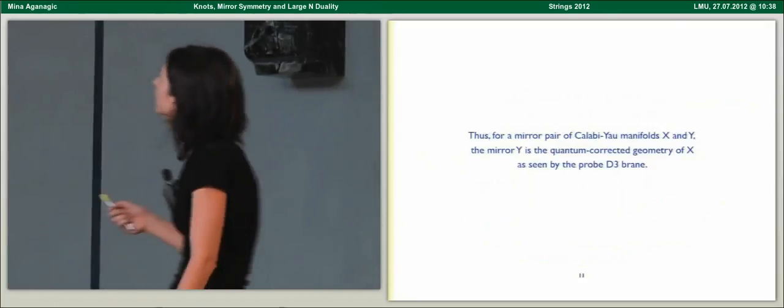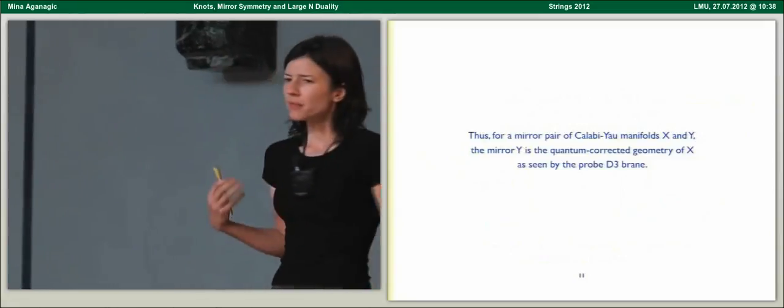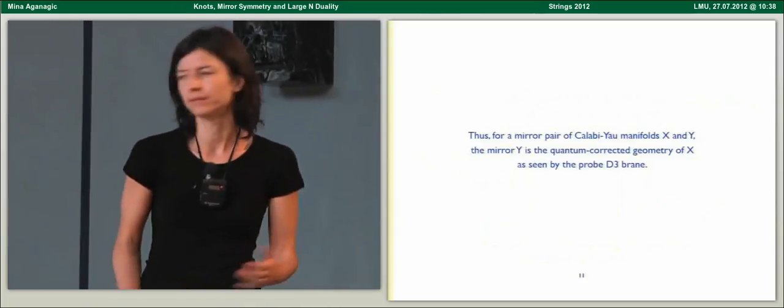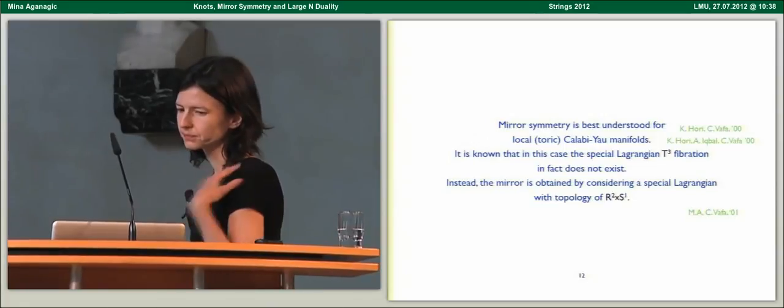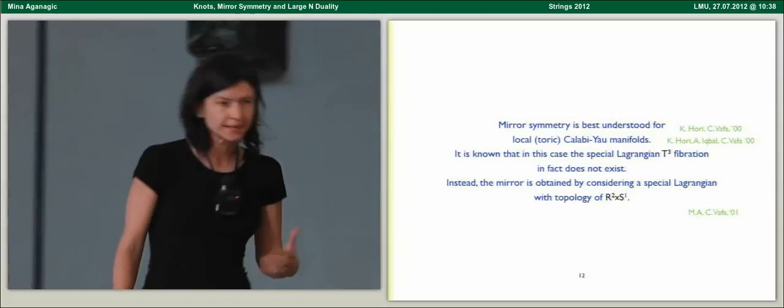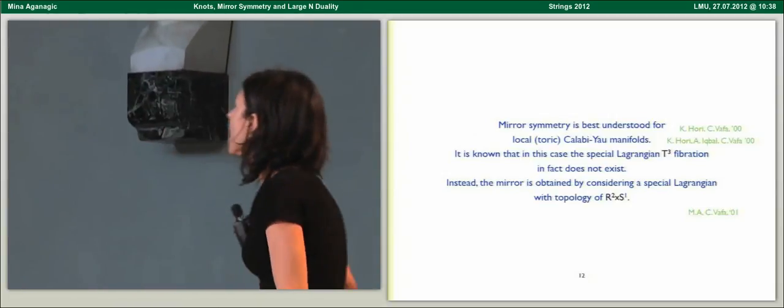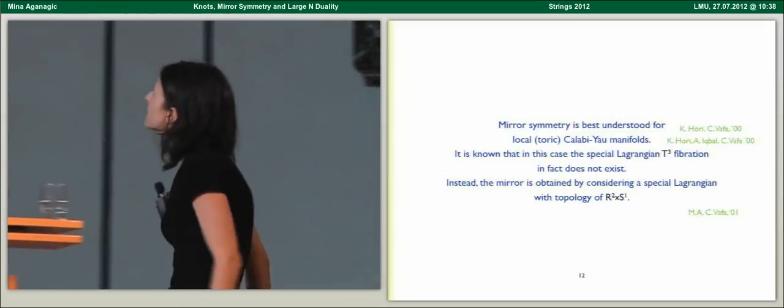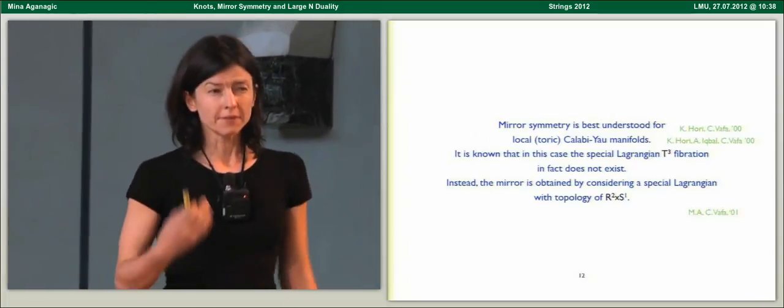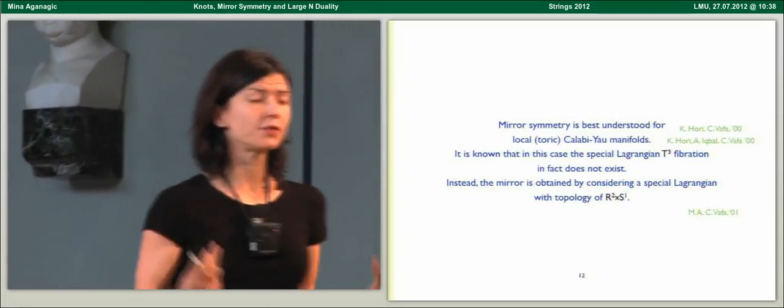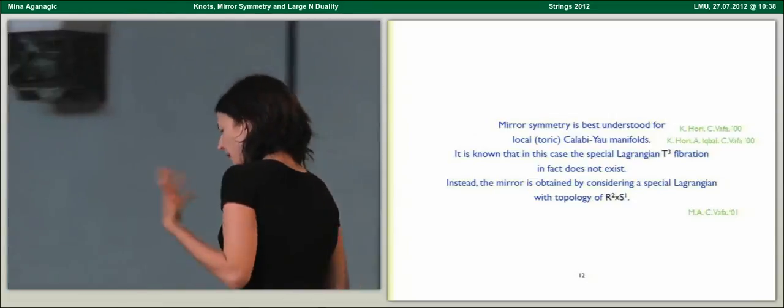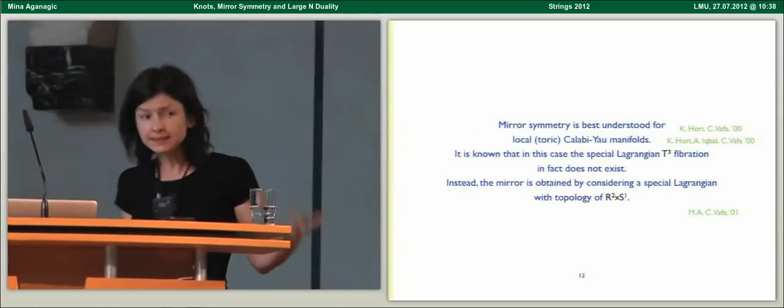For a mirror pair of Calabi-Yau manifolds X and Y, the mirror arises as a quantum-corrected geometry of X as seen by a probe D3 brane. Mirror symmetry is best understood for local Calabi-Yau manifolds where you can essentially prove it to all genera. It is known in this case that the special Lagrangian T3 fibration does not exist.